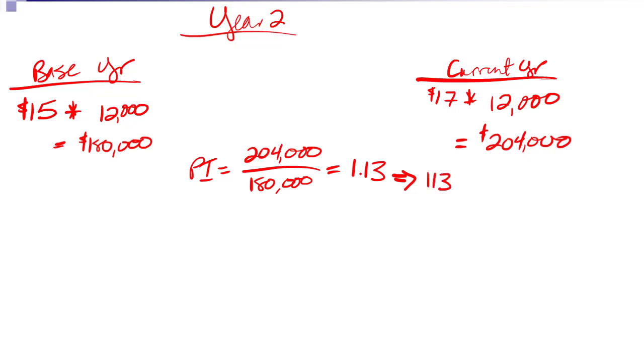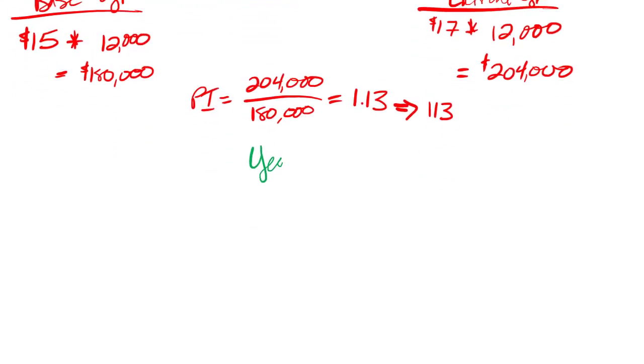The way we say a price index by convention is 113. That's how we say it, but you need to know: if I see price index 113, I know it's 113 percent or 1.13. Now let's take a look at year three, and we're going through the exact same process—base year, current year.